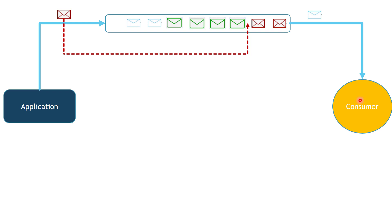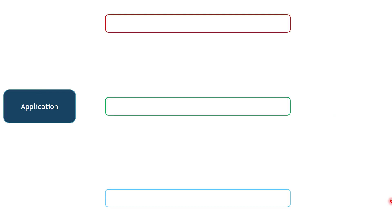What if your Message Queue provider doesn't support priority queues? In that situation, you can create a dedicated queue for each priority level. So we will have three queues: a high priority queue (the red queue), a medium priority queue (the green queue), and a low priority queue (the blue queue). The application sends high priority messages to the red queue, medium priority messages to the green queue, and low priority messages to the blue queue.